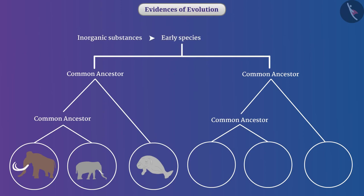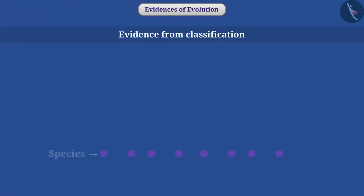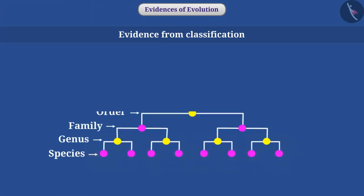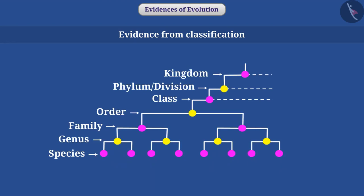Let us discuss various evidences in the context of evolution. Evidence from classification: There are many species of plants and animals on earth. If we classify them on the basis of natural similarities and differences — for example, kingdom, phylum or division, class, order, family, genus, and species — then we get the idea of how various groups would have evolved.